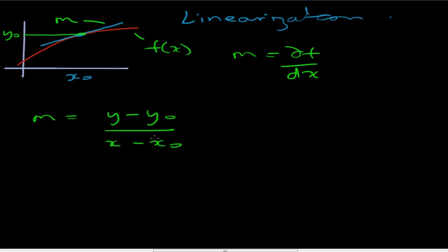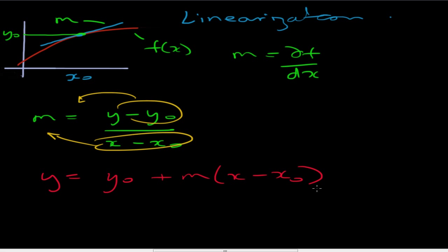Now I can rearrange this by first taking this up to there, and then bringing the y0 onto the side. And if I do that, I get y equals y0 plus m times x minus x0. That equation describes the tangent line at x0.